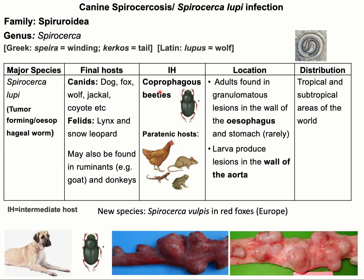...dung beetles or coprophagous beetles. Chicken, rat, lizard, and frog may act as paratenic hosts in the lifecycle of Spirocerca lupi. Adult parasites are usually found within the esophageal granuloma formed in the wall of the esophagus. The immature stages are...